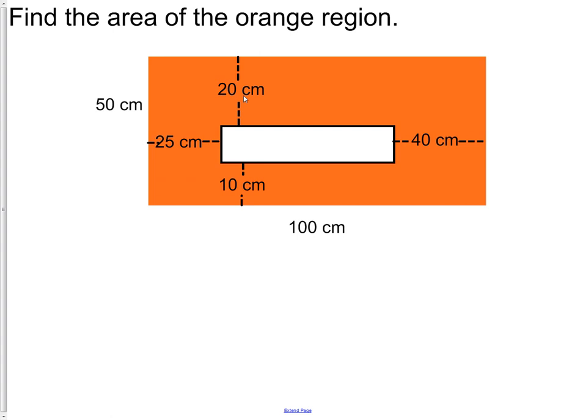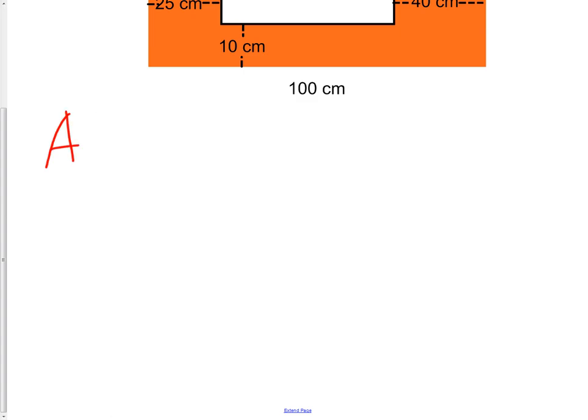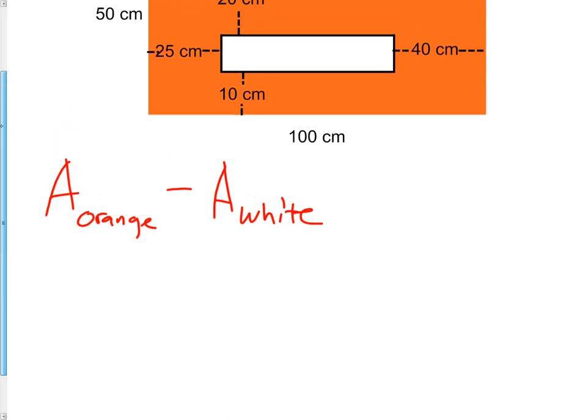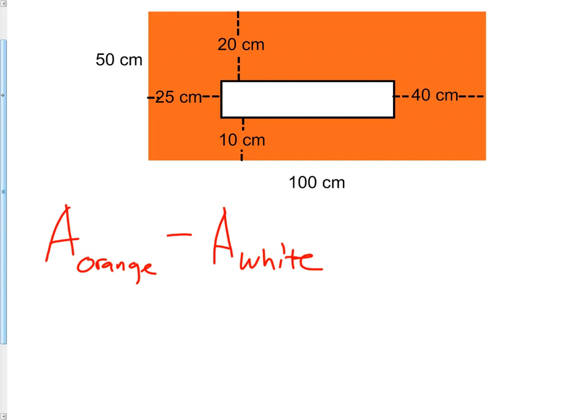So what we're actually going to do is we're going to take the area of the orange and subtract the area of the white. Sometimes we're going to add areas, sometimes we're going to subtract areas. This time, we're going to subtract. As we look at the orange, we see that the height is 50 and the width is 100. The area of a rectangle is done by taking base times height, or 100 times 50.